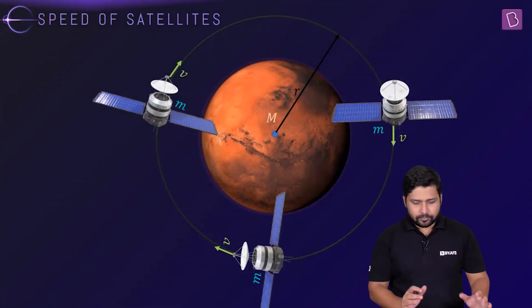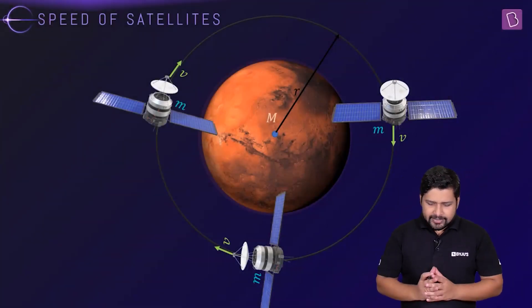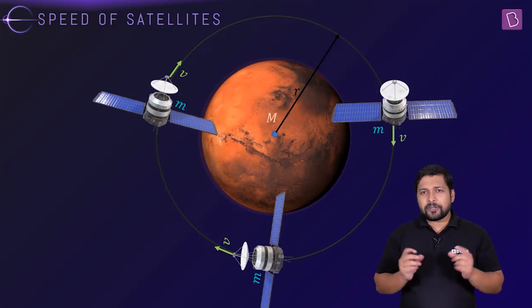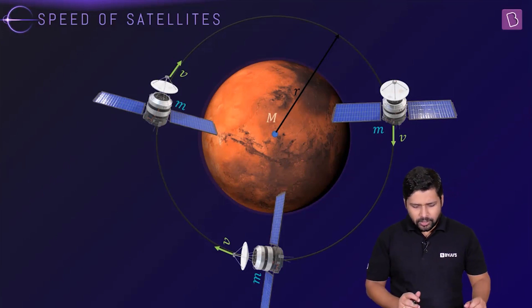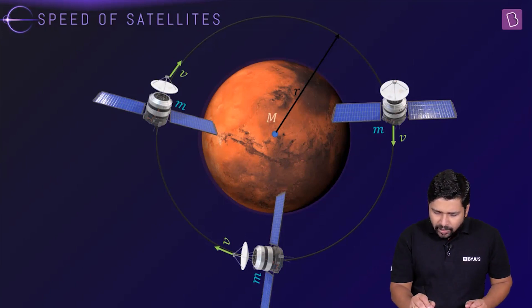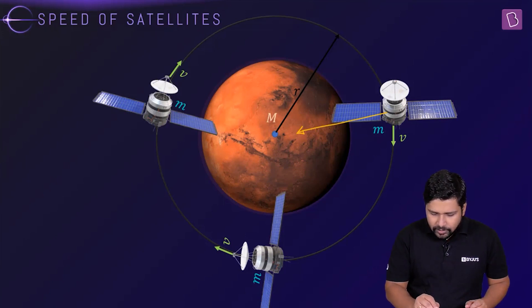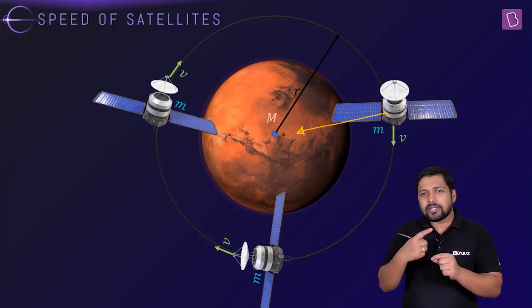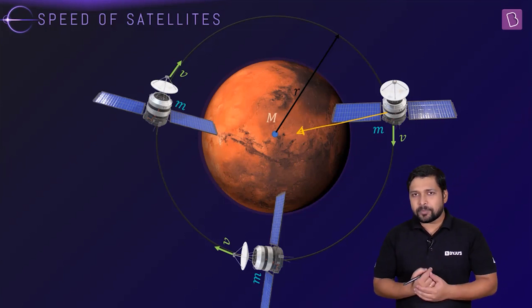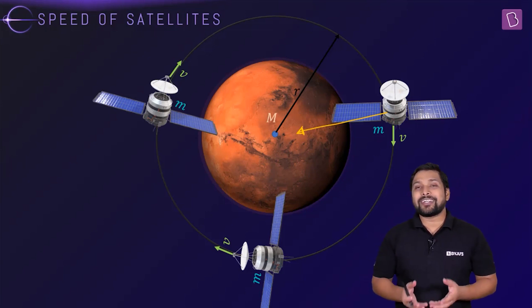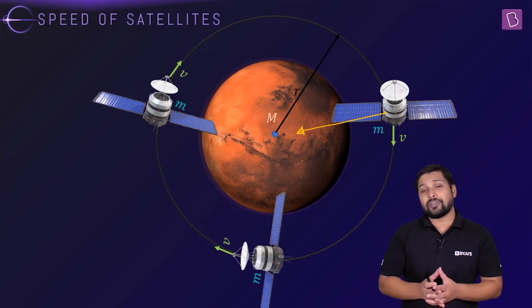Let's understand the satellite with regard to the forces acting on it. If it is moving in a circular orbit, there has to be a force towards the center — this force is the centripetal force. This centripetal force will be provided by the gravitational force.